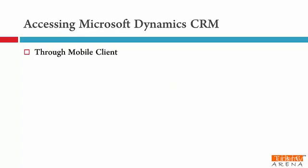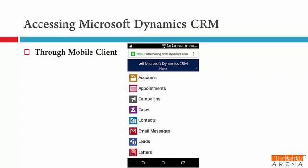And the final way to access CRM is through a mobile client. It allows you to access CRM data on your mobile device. It should have a compatible browser and this is how it looks like. You just need to open the browser, enter the URL of CRM installation or deployment and you just enter your credentials. It will work.